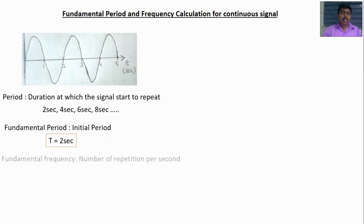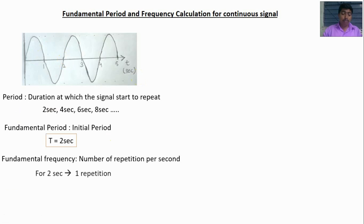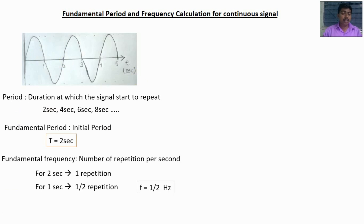Fundamental frequency is defined as the number of repetitions per second. By observing the signal, for every 2 seconds it repeats once. So for 2 seconds, repetition occurs 1 time; for 4 seconds, 1/2 repetitions. So frequency is equal to 1/2 Hertz. The relation between T and F is: F is equal to 1 by T.